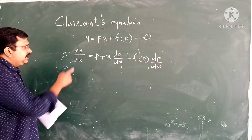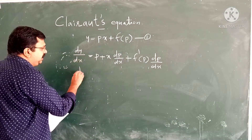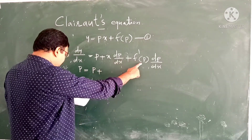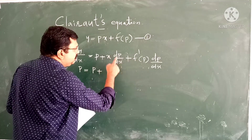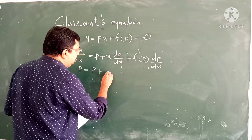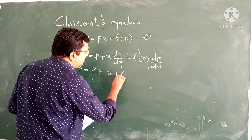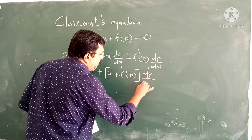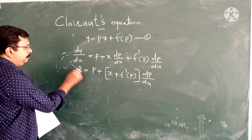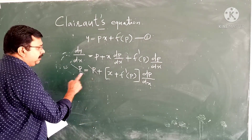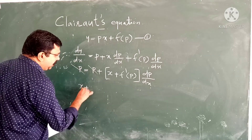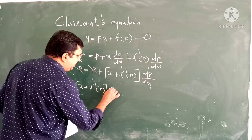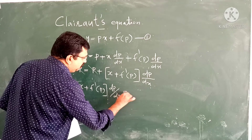When differentiating with respect to x we get f dash p into dp by dx. We know that dy by dx is p. Therefore p equal to p plus x into dp by dx plus f dash p into dp by dx. Here p and p cancel, then dp by dx is common. This can be written as x plus f dash p into dp by dx equal to 0.